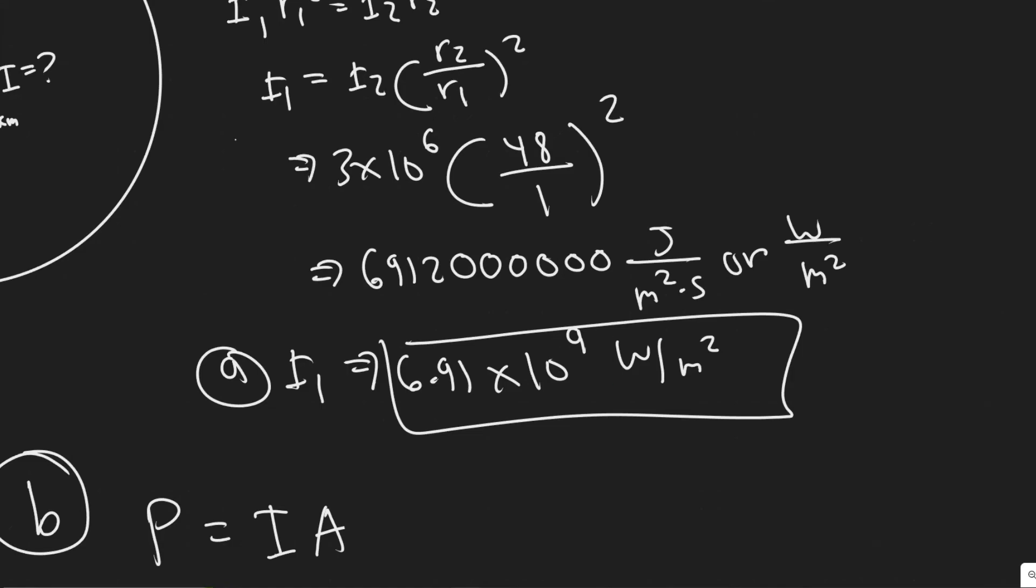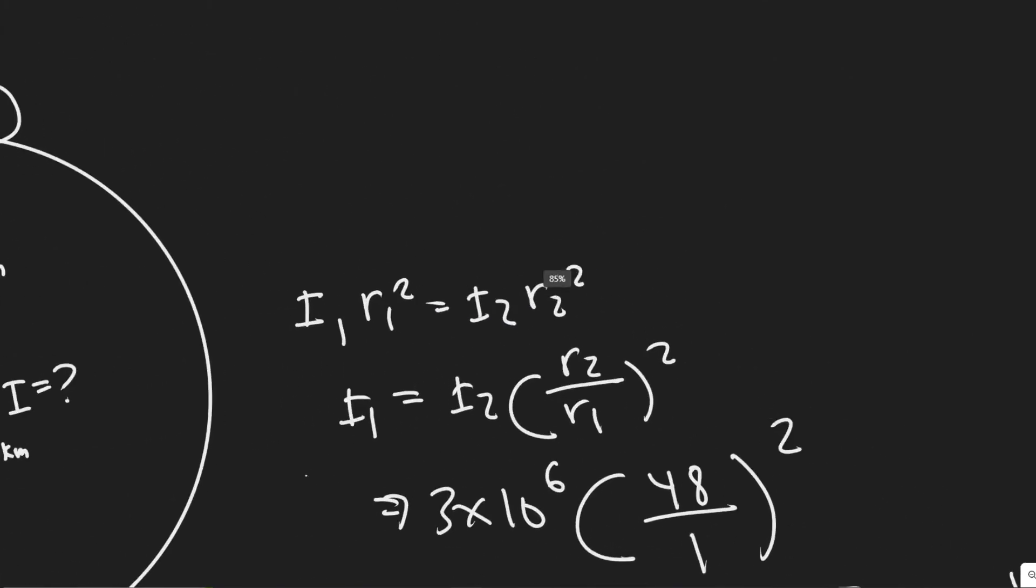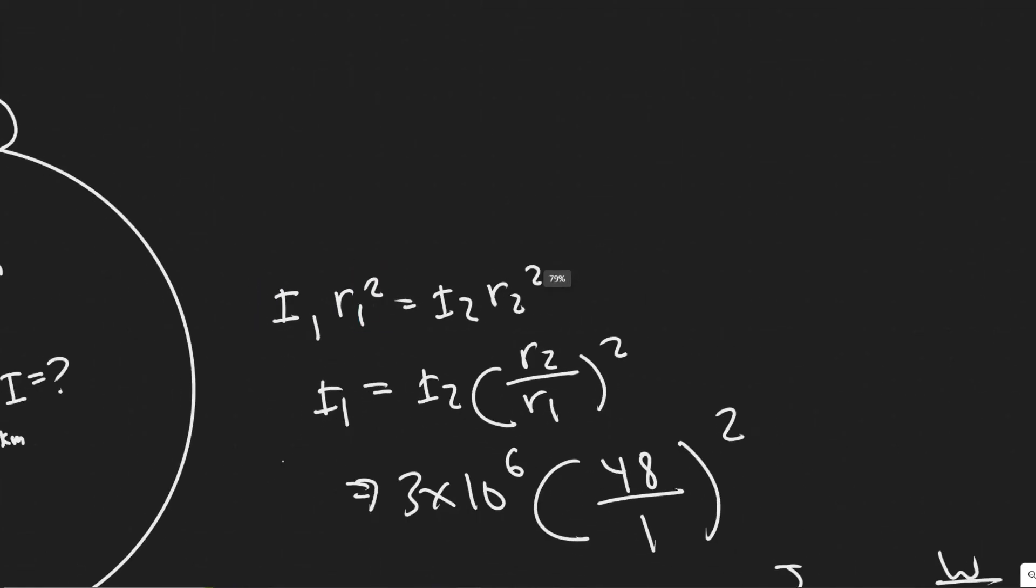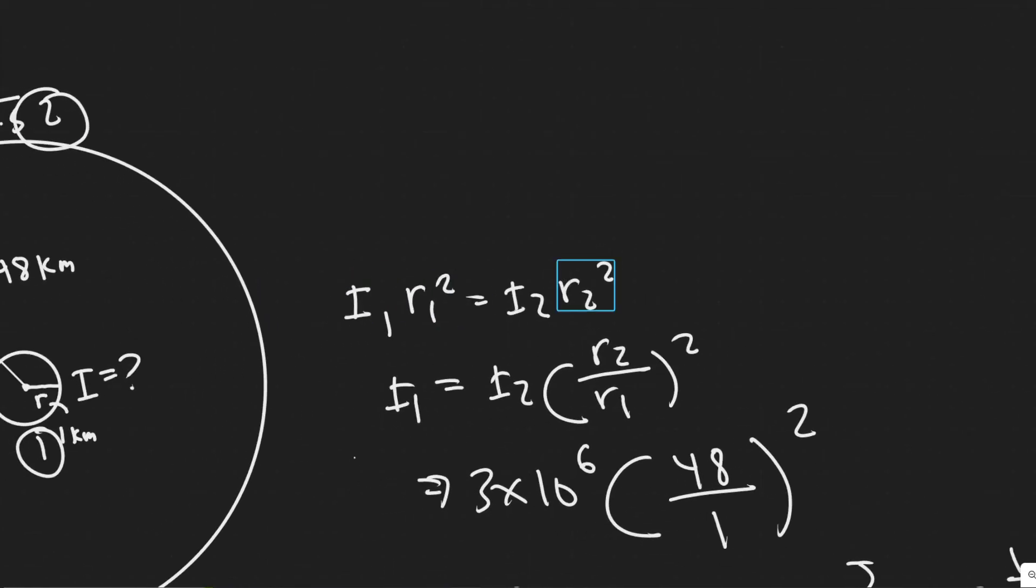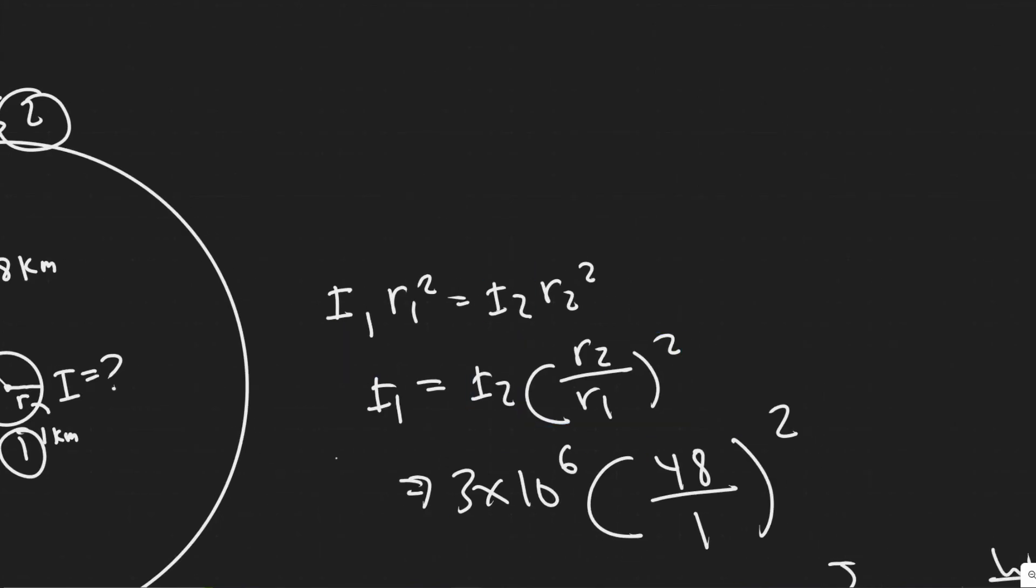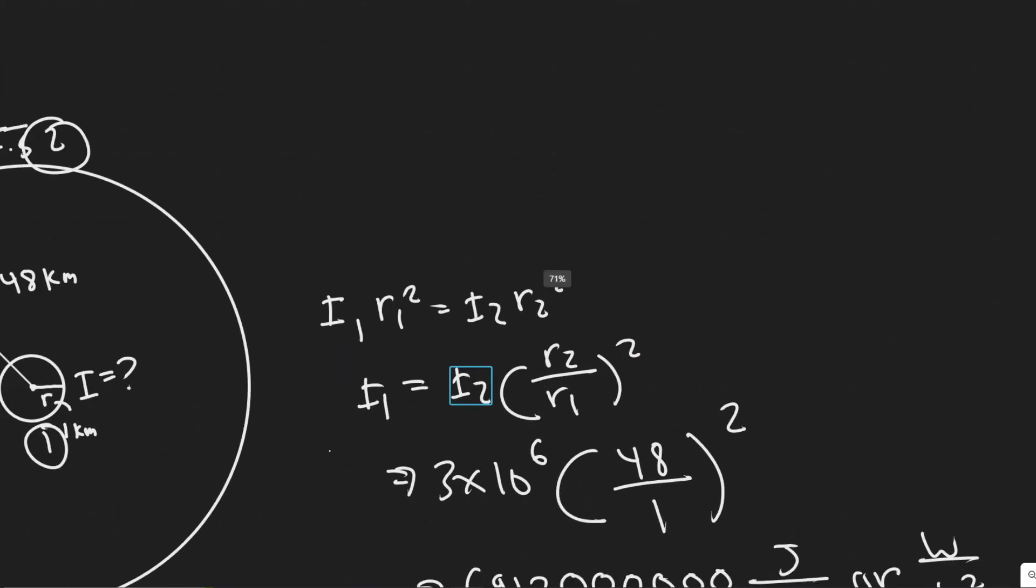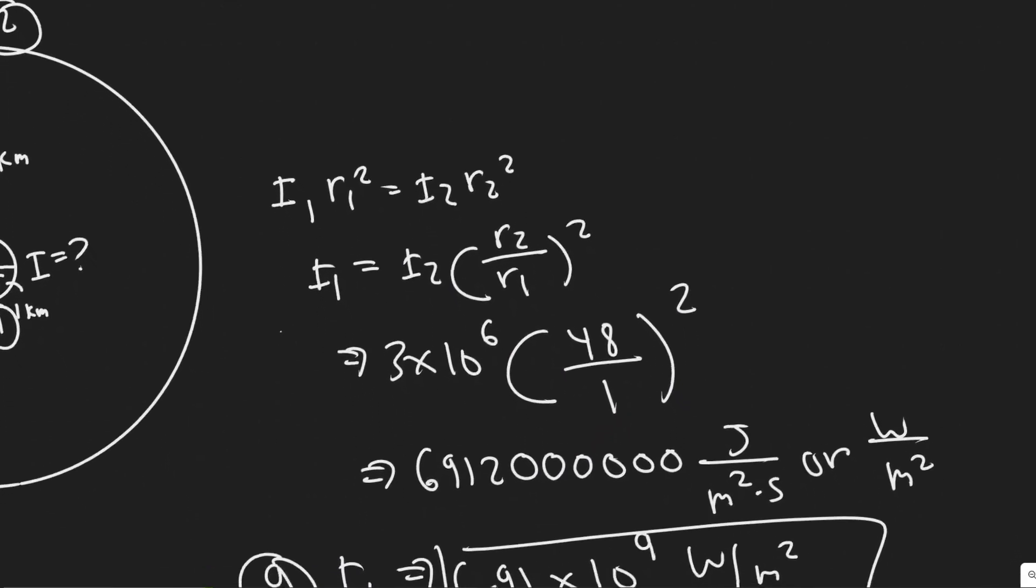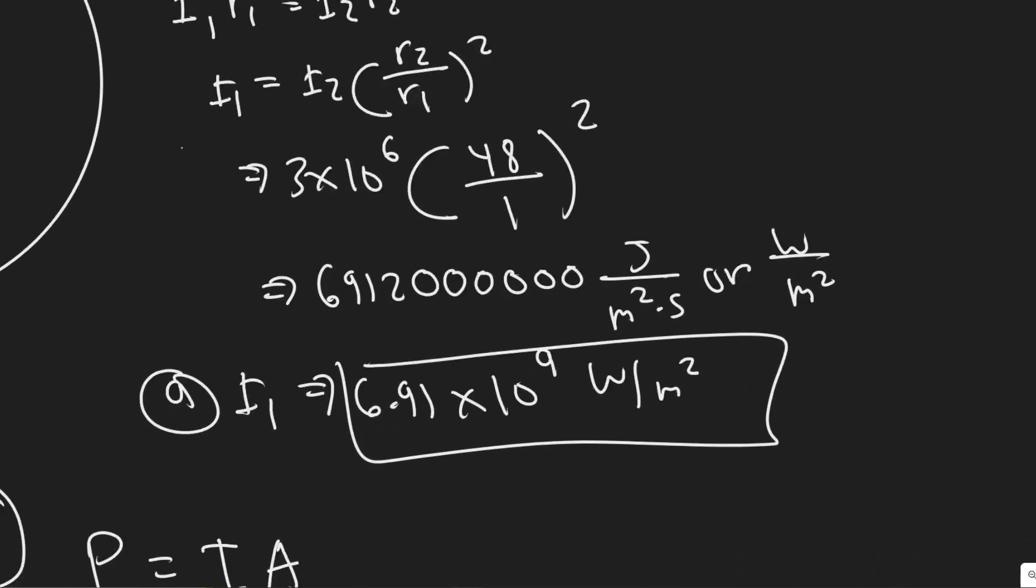But yeah, so just a quick rundown of what we did. We basically use this formula where you relate the intensity and the radius of a wave at two points. And then we just basically solve for at one point and then plugged in the values to actually solve for it. And obviously the units didn't matter here because they canceled and it was just a matter of plugging in and solving.